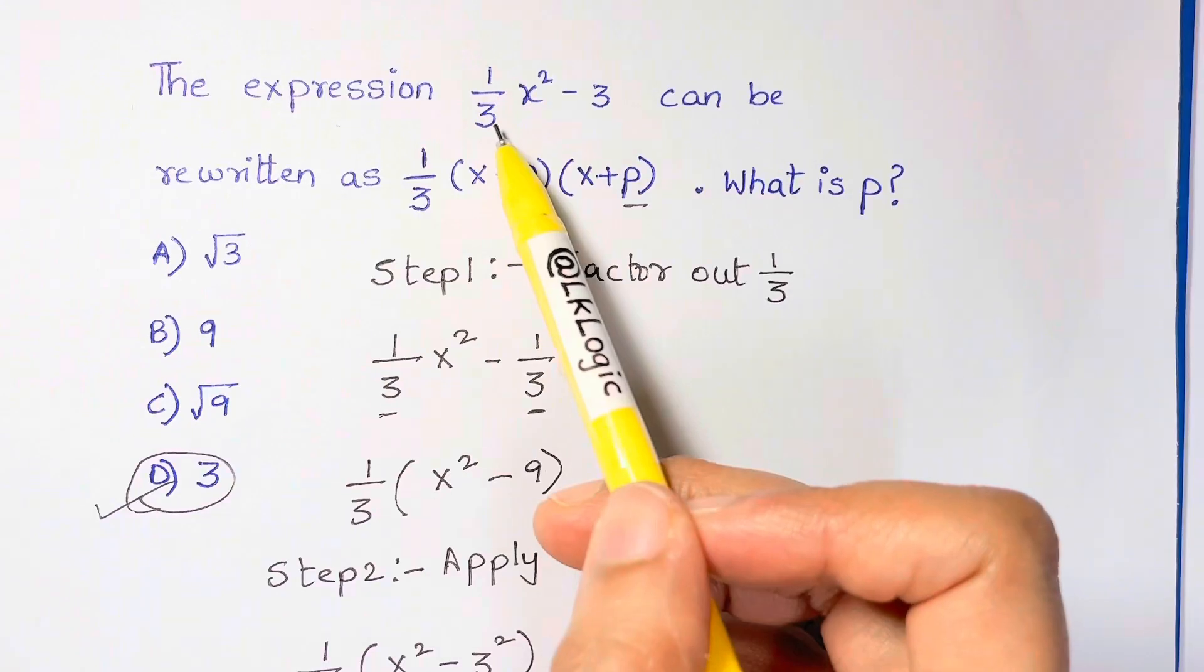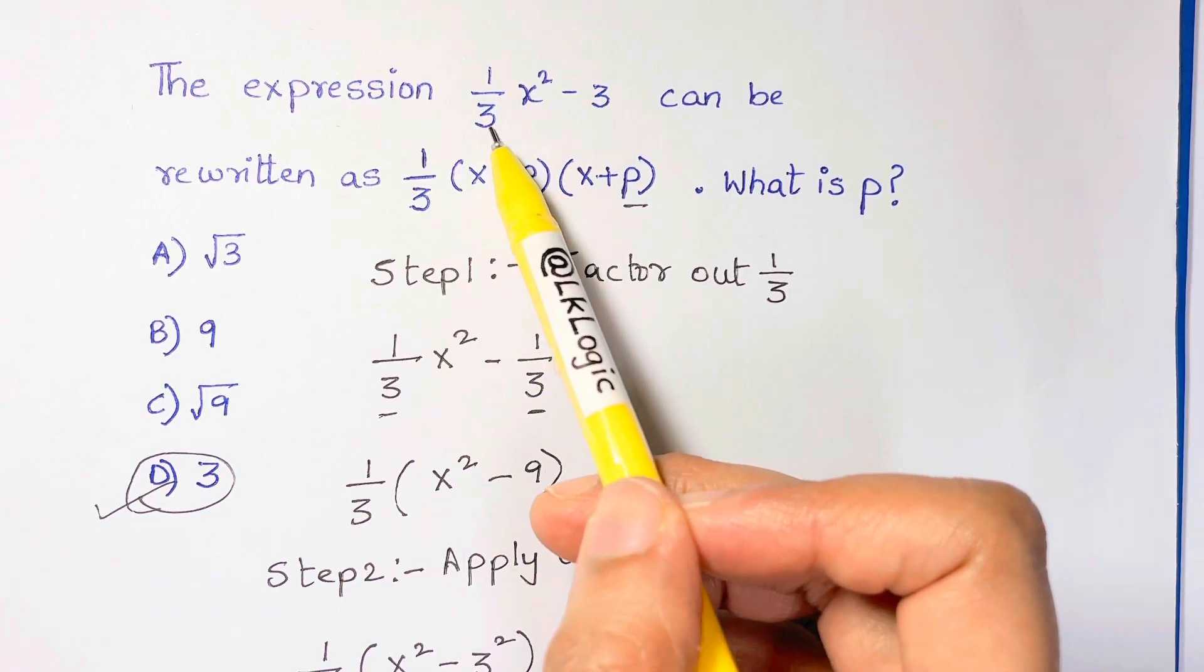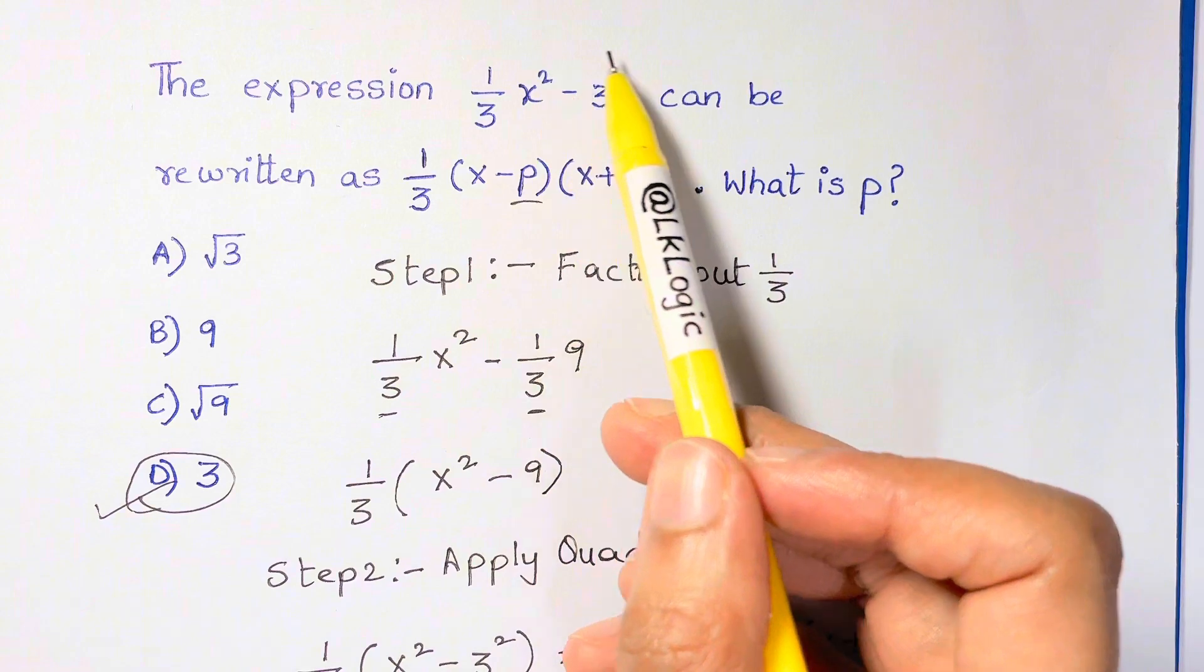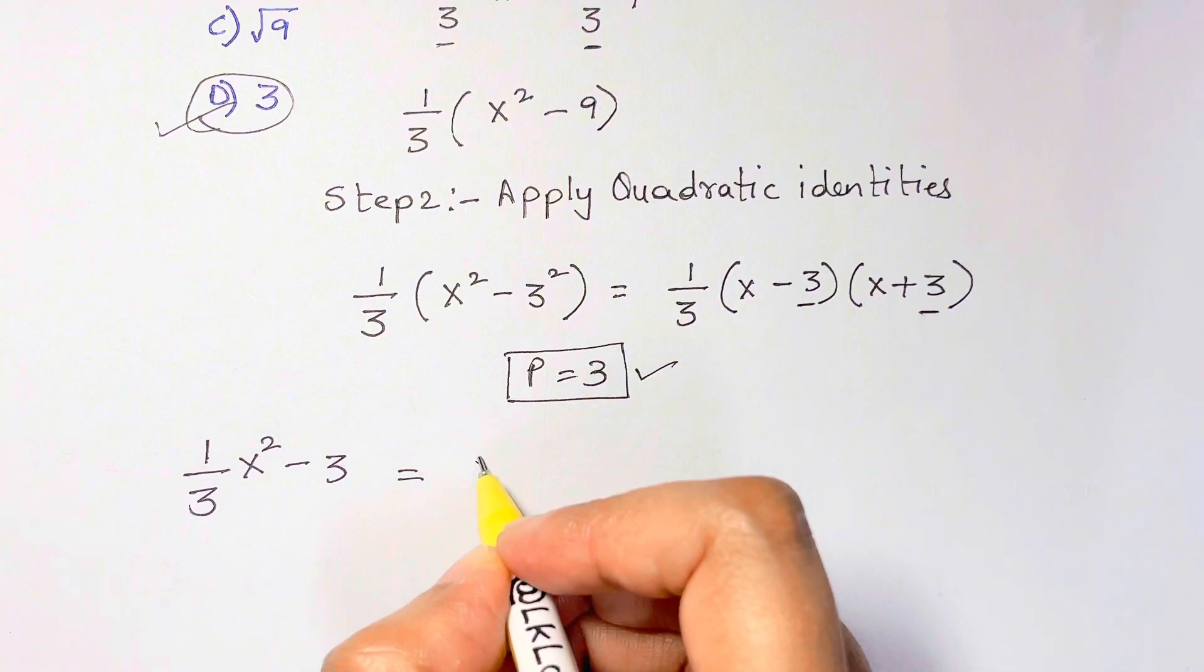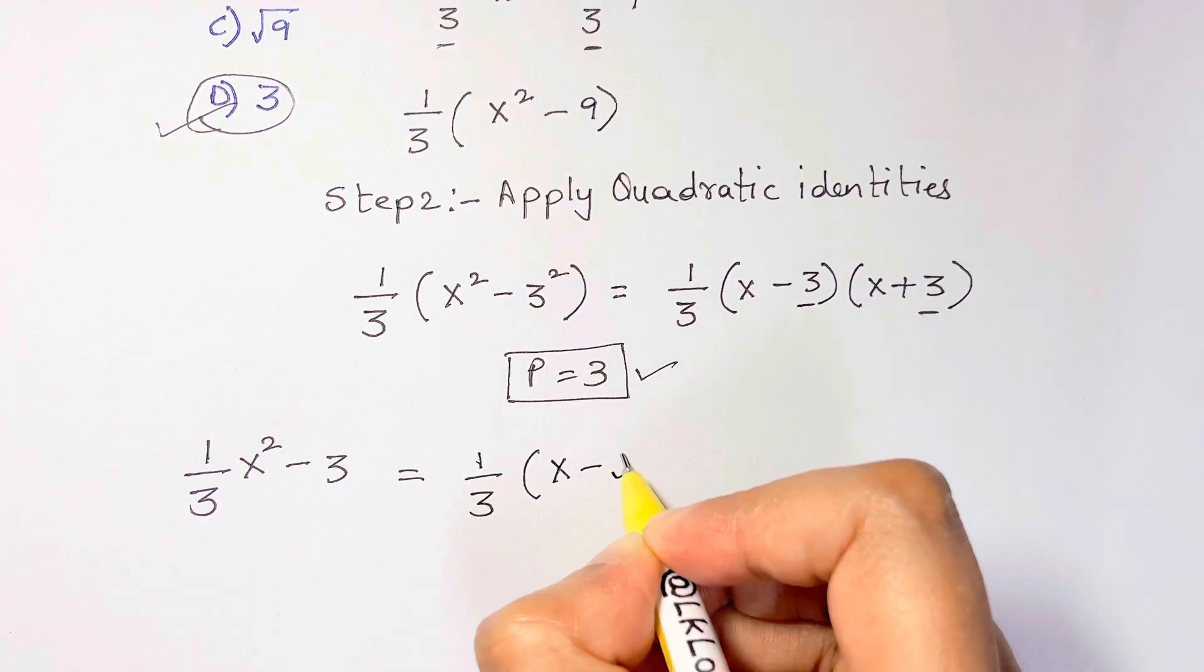A lot of people forget to pull out 1/3, therefore they start applying the quadratic identities right away. This is an example of what not to do: they do 1/3(x - √3)(x + √3).